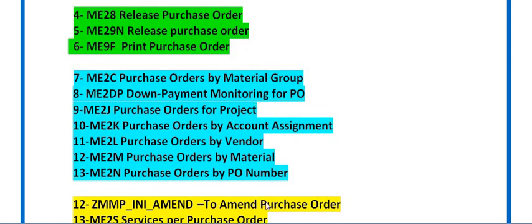These are the transaction codes related with reports. ME2C gives purchase orders by material group — if you want a purchase order list by material groups such as power plant, electrical services, civil services, or housekeeping services, you can use ME2C. ME2DP is used to monitor the down payment details of the purchase order.